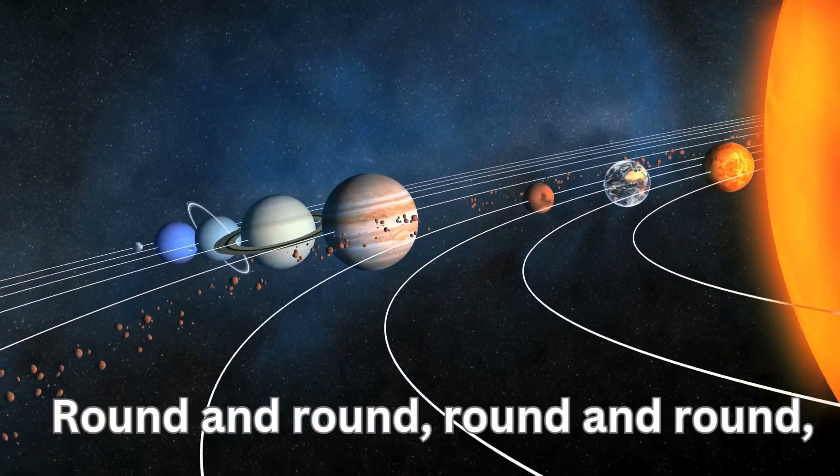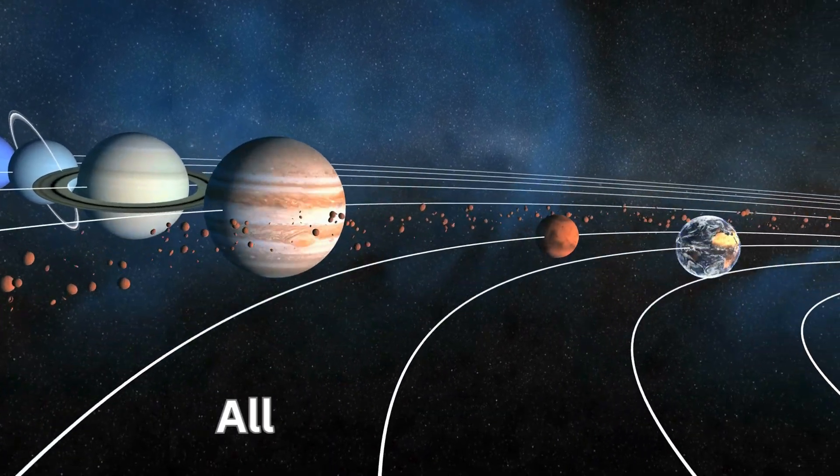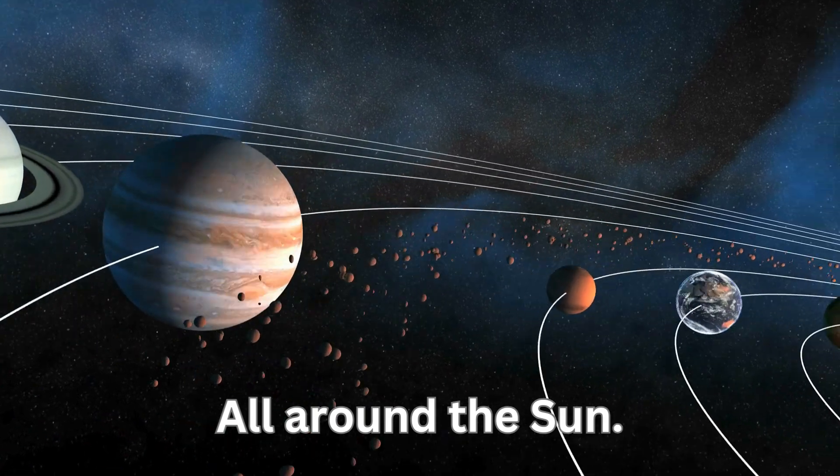Planets in space go round and round, round and round, round and round. Planets in space go round and round, all around the sun.